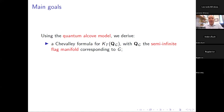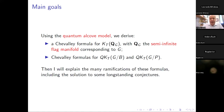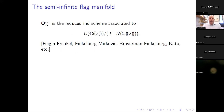Today's talk is about the Chevalley formula for the T-equivariant K-theory of the semi-infinite flag manifold corresponding to G, denoted QG. This flag manifold is a non-standard affine version of the usual flag manifold. The combinatorial model used here is a so-called quantum version of the alcove model. We will use this formula to derive a Chevalley formula for T-equivariant quantum K-theory of G/B and also for partial flag varieties. The main point of the talk is to explain the many ramifications of these formulas, including the solution to some long-standing conjectures.